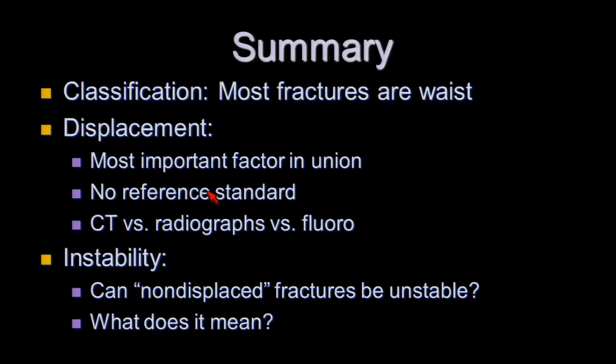So I think the classification is relatively straightforward. We're mostly talking about waist fractures. The distal ones are mostly – the tubercle are different from the distal waist. And then the proximal pole are an unusual type of fracture that we're not sure right where the cutoff point is. Displacement is the most important factor in union and prognosis, but we don't have a reference standard for displacement. And we're just not sure how to define it and how to measure it. The best we can do is CT scan in the plane of the scaphoid, but even that isn't perfect.